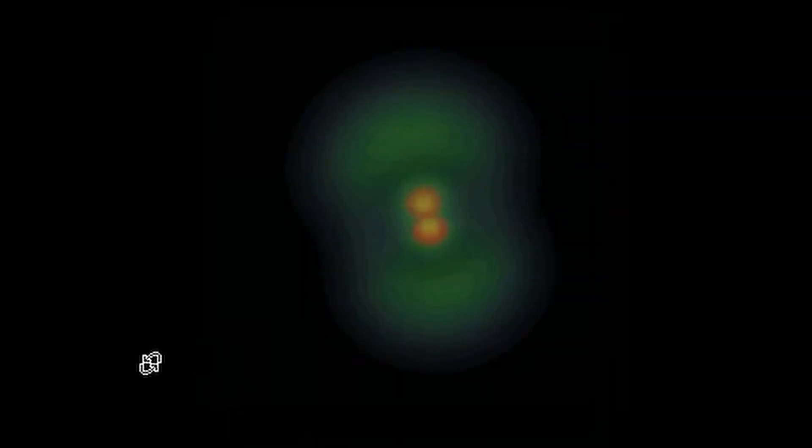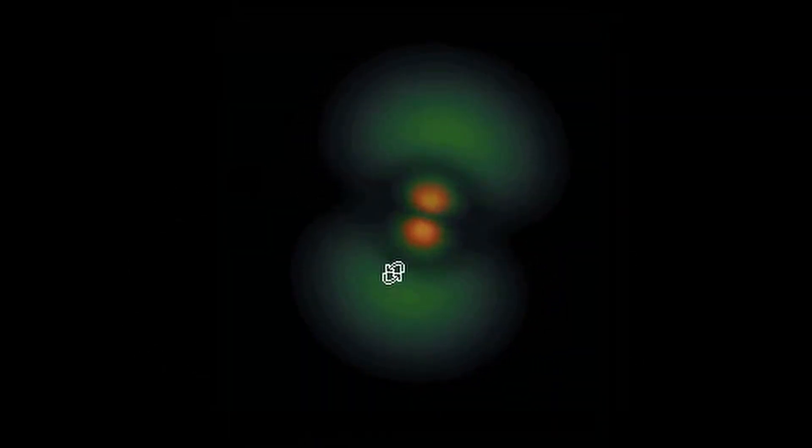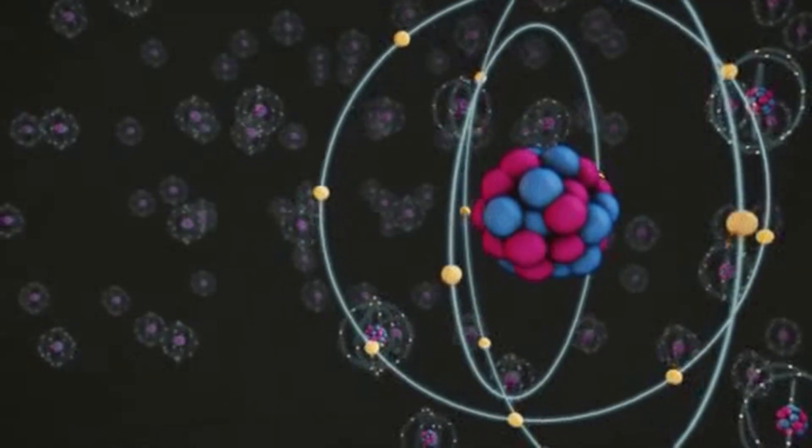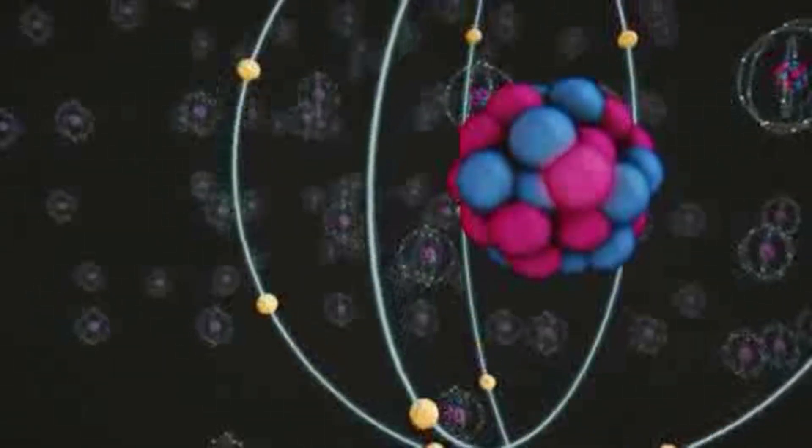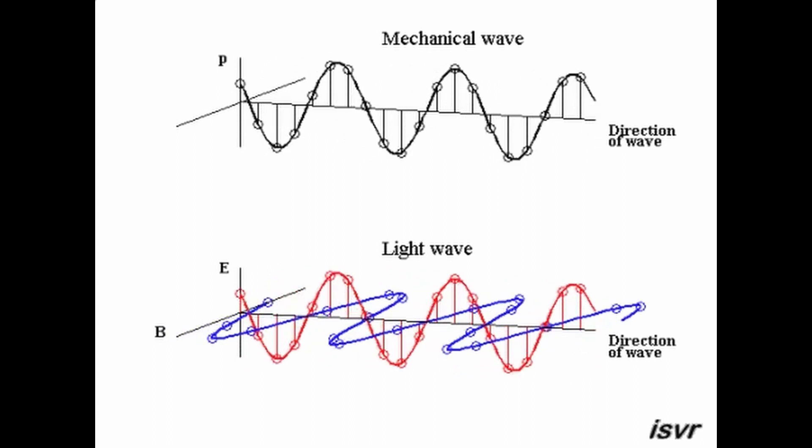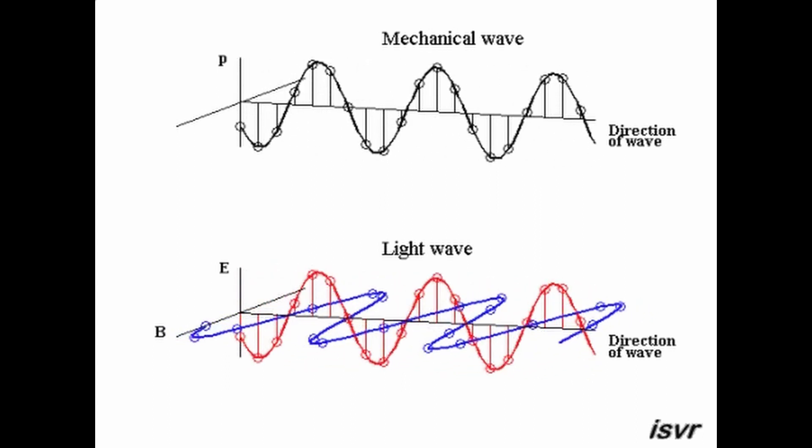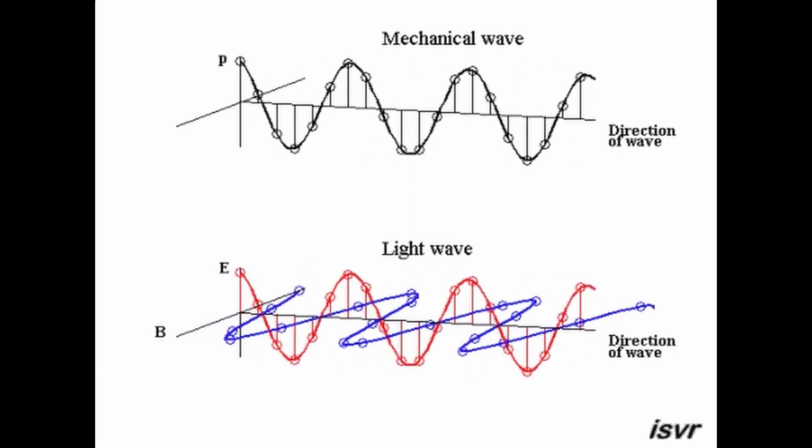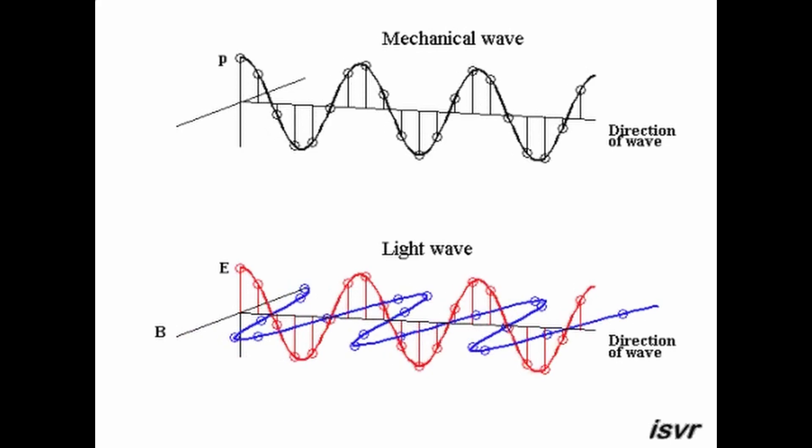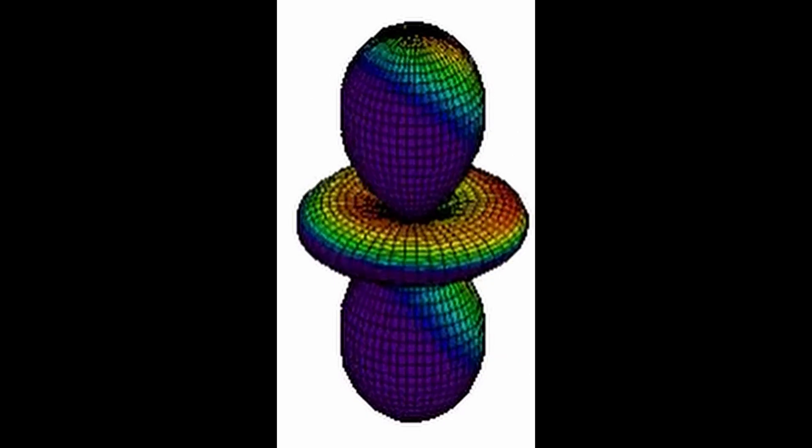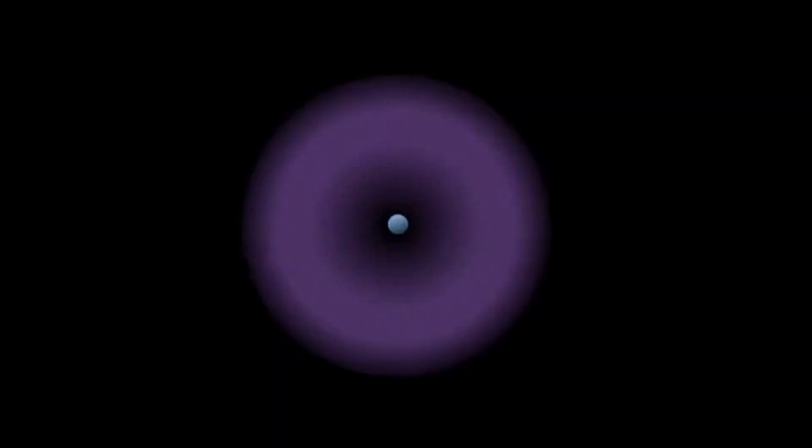Planck's work on quantized energy and the introduction of his constant laid the foundation for the development of quantum mechanics, a new branch of physics that describes the behavior of matter and energy at atomic and subatomic scales. It also paved the way for future breakthroughs in physics, including the development of quantum theory by pioneers like Albert Einstein, Niels Bohr, Werner Heisenberg, Erwin Schrödinger, and others. The discovery of Planck's constant represents a defining moment in the history of science, as it fundamentally changed our understanding of the microscopic world and the nature of energy and matter. It is a testament to the power of human ingenuity in the quest to unravel the mysteries of the universe.